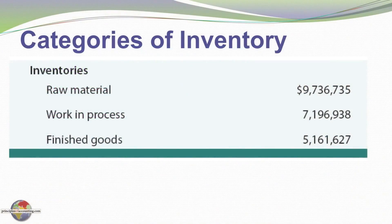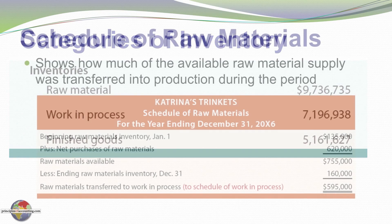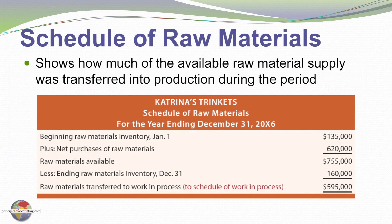On a balance sheet for a manufacturer, either directly on the face of the balance sheet or in the related notes, there would be an indication of all three categories of inventory. Let's next consider how these costs are processed in the financial statements of a manufacturer.